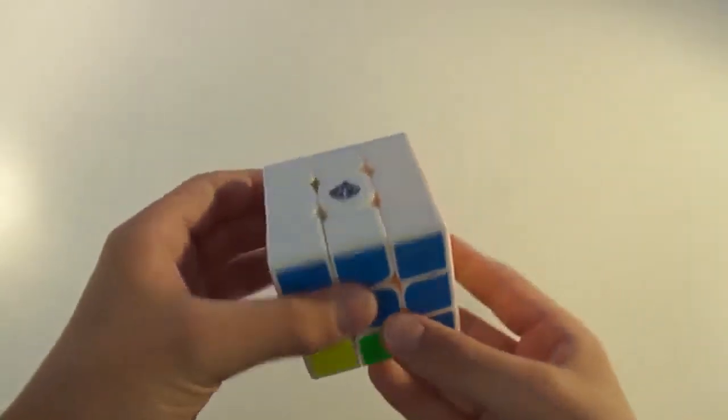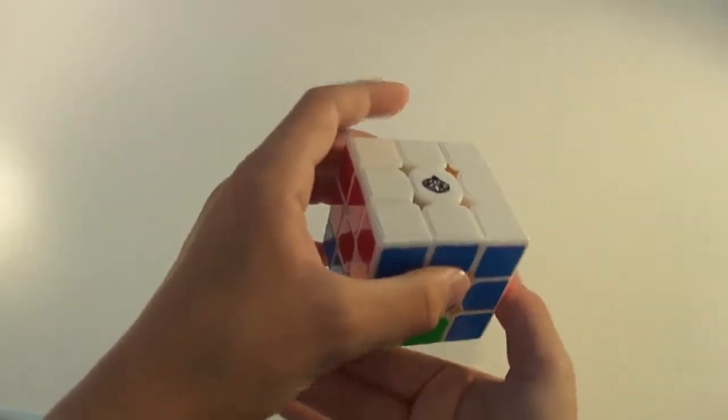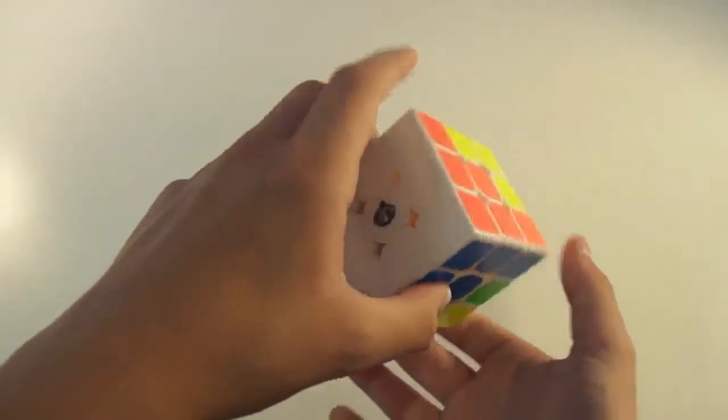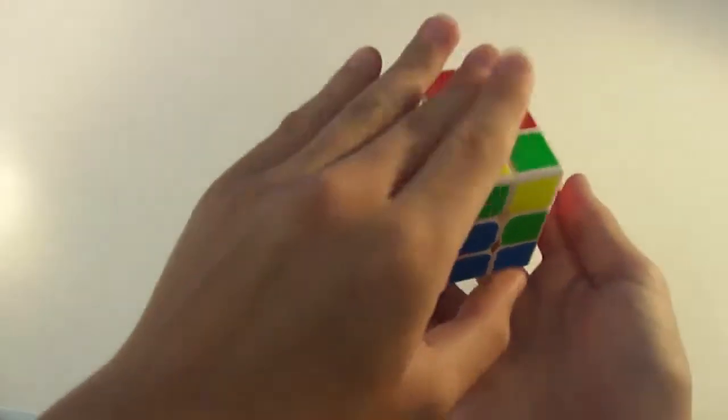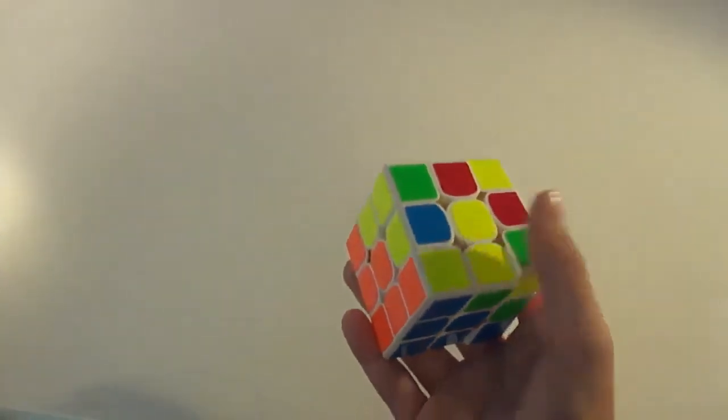Now, we're to the part where you will flip the cube over, so white is on the bottom, and yellow, the yellow center, is on top.